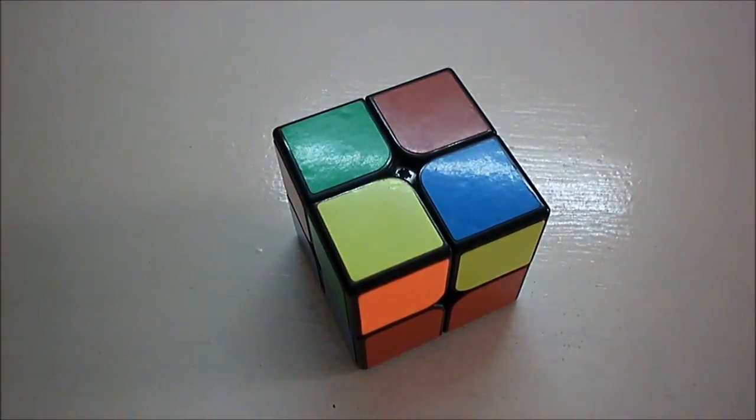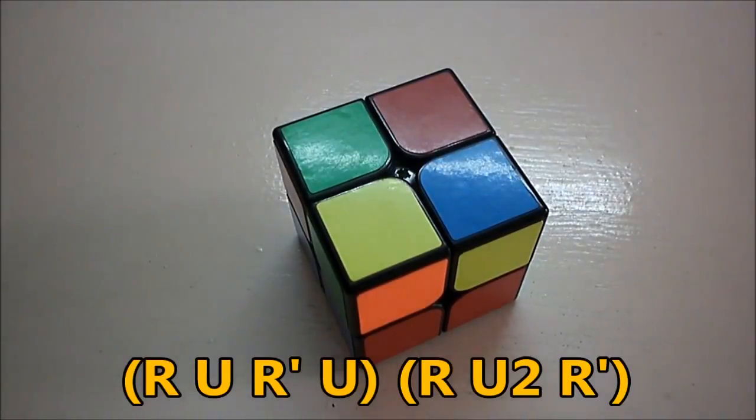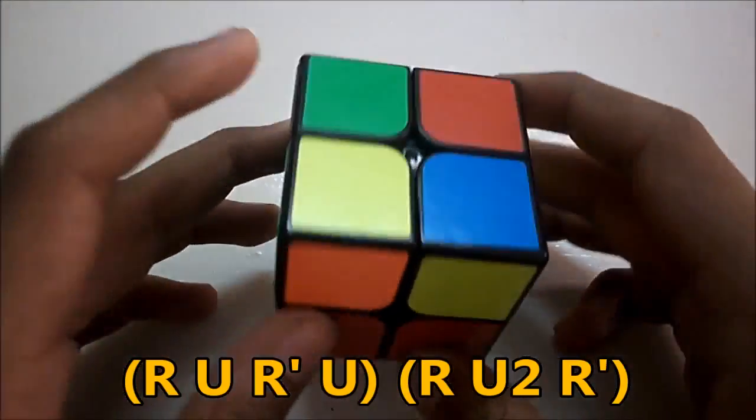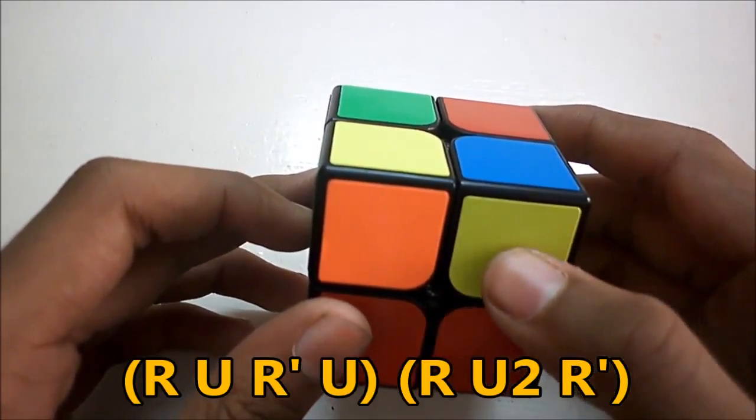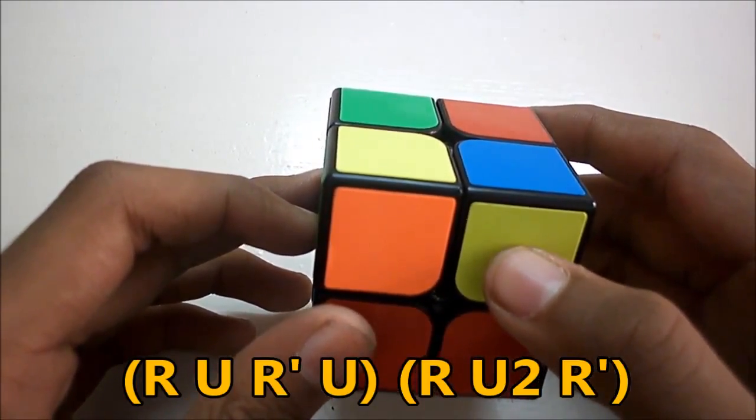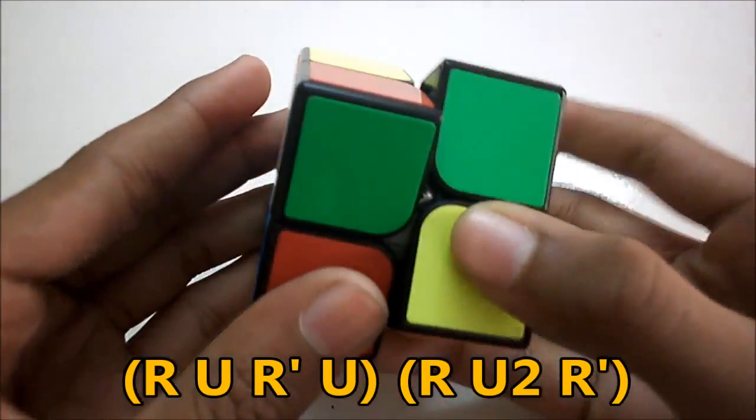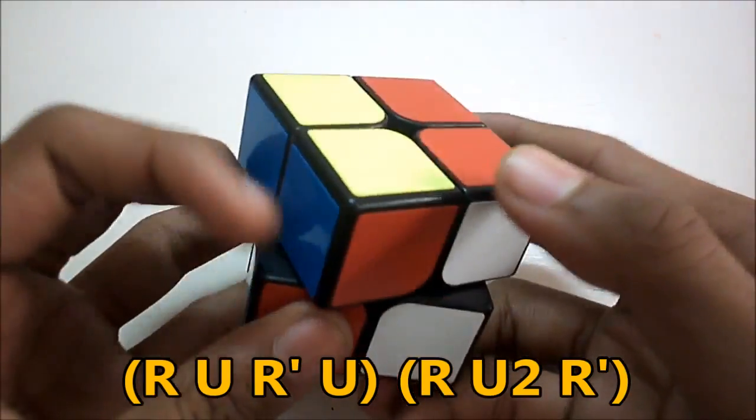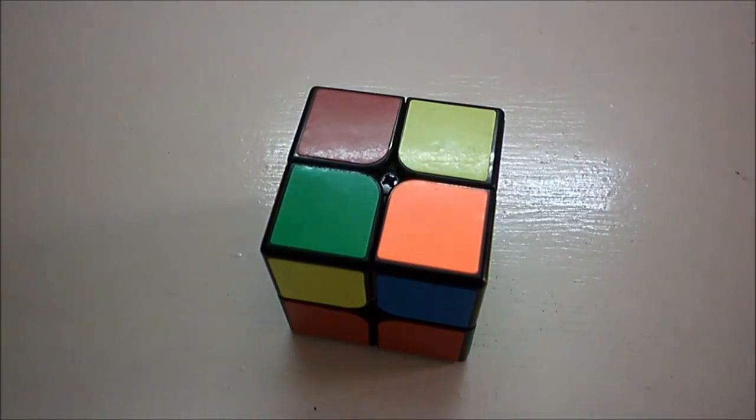So the next case is what we call the Sune which you might already know from 3x3 beginners method. So you execute it by keeping this solved corner on the top and this facing you, this corner facing you, and do the algorithm R U R' U R U2 R'.